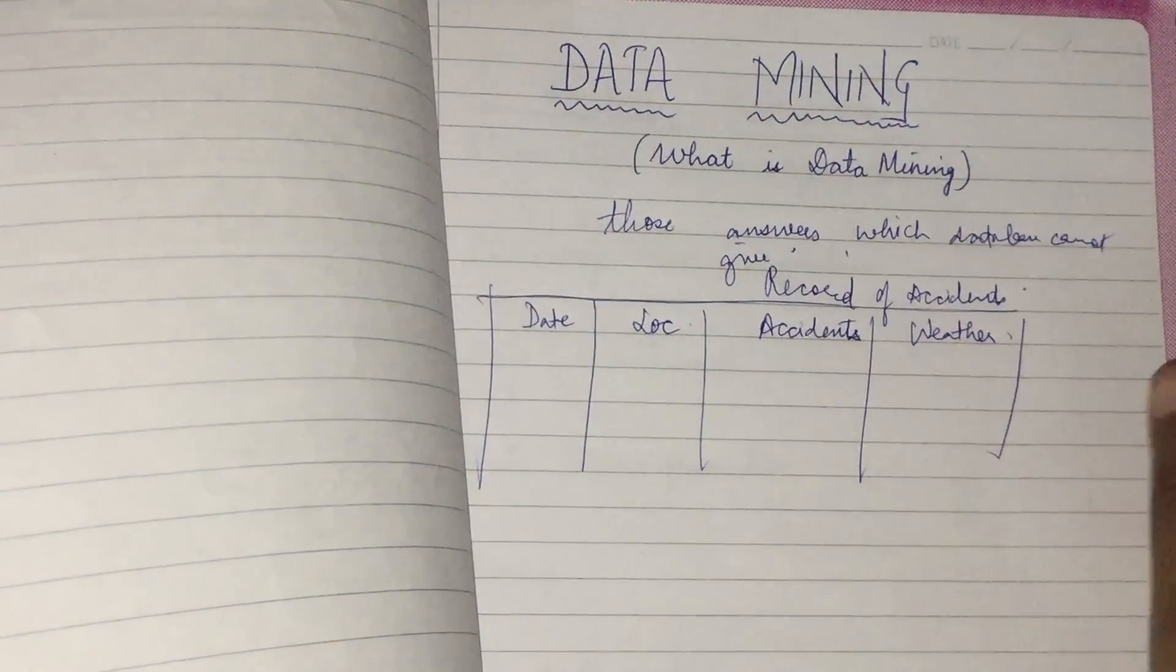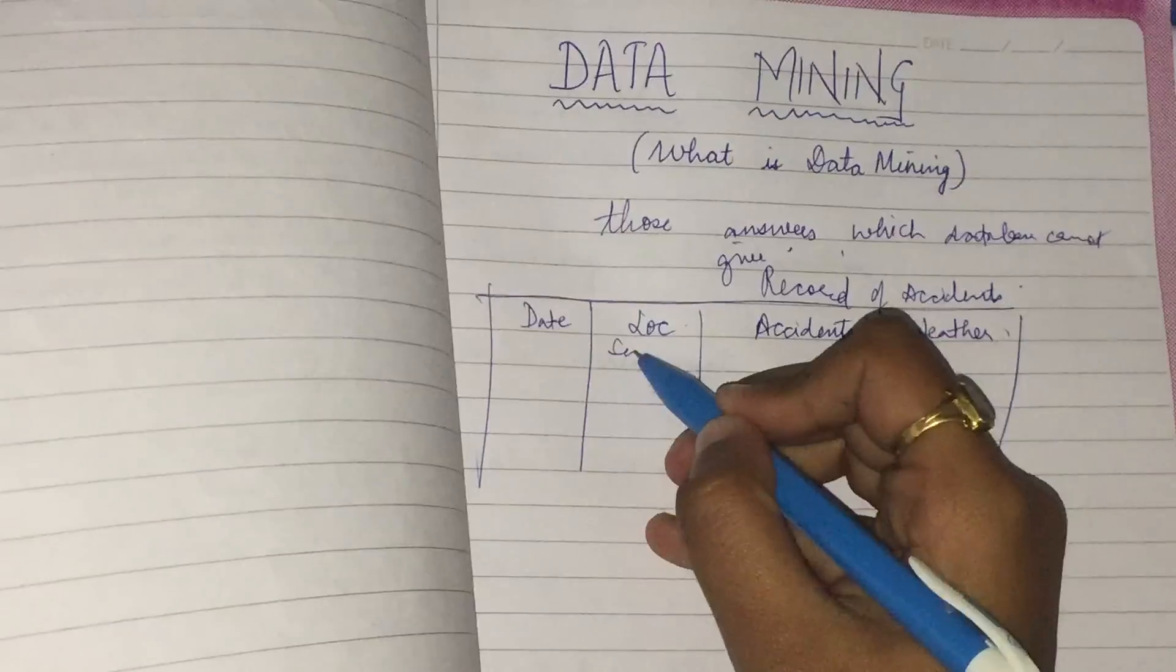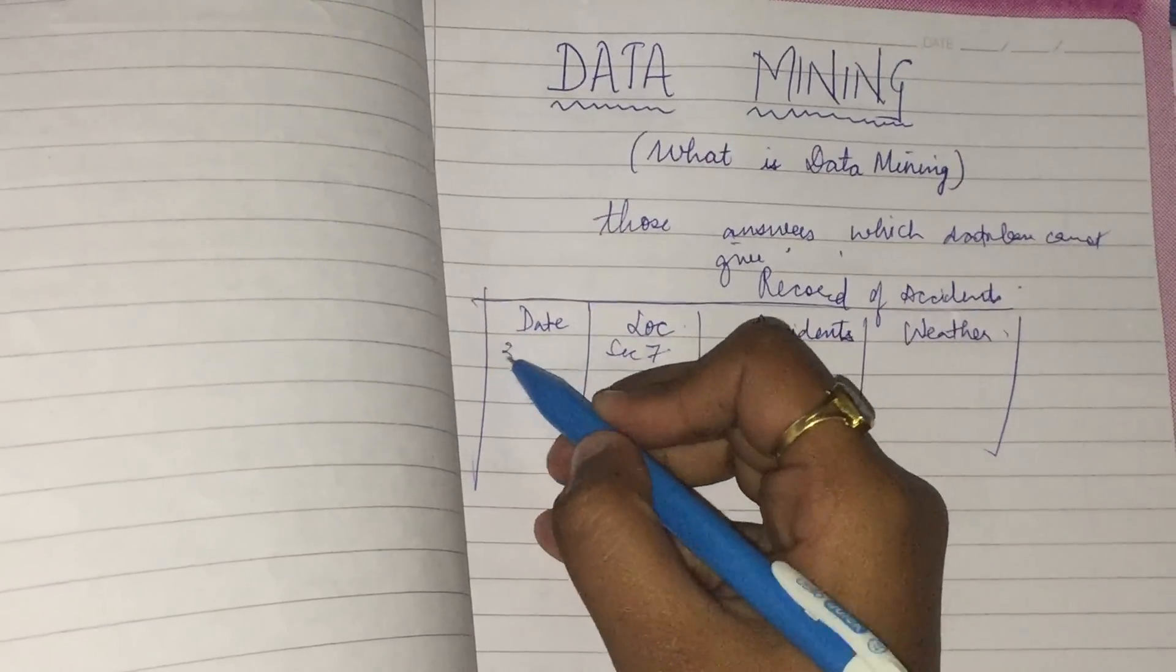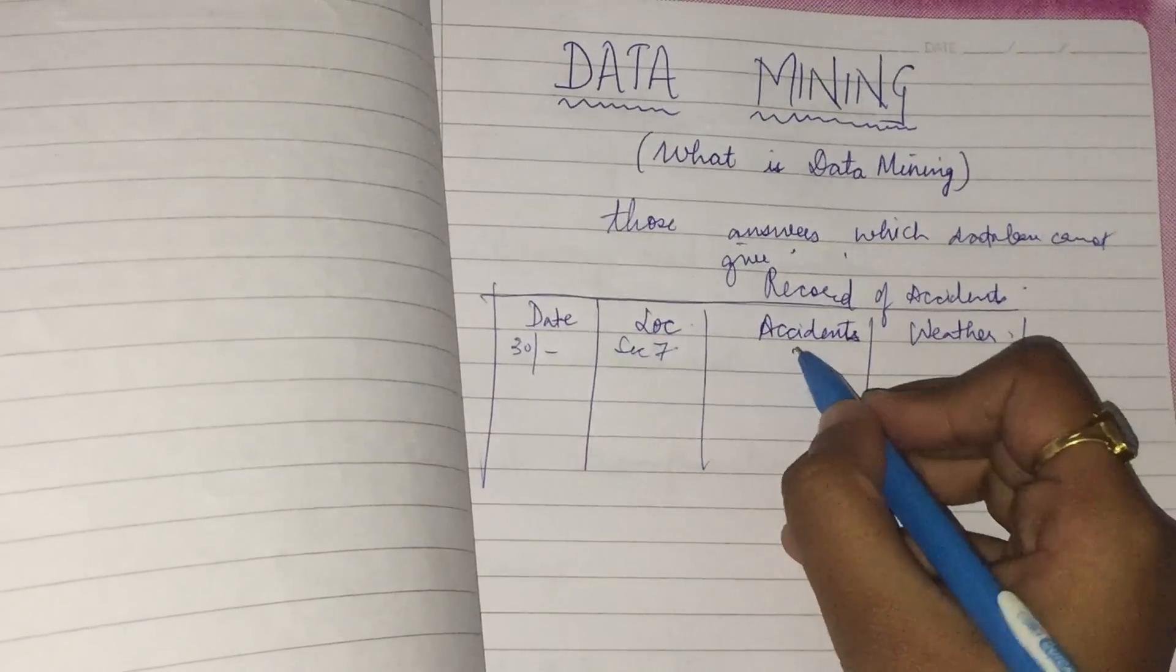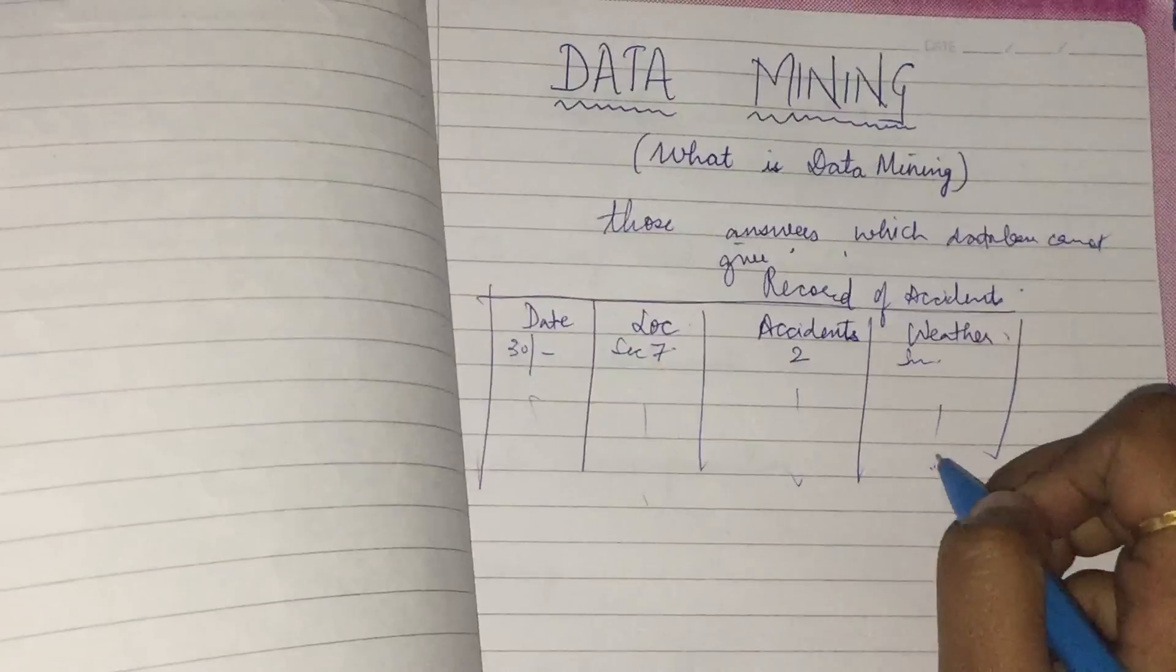On sector 7, on date 30th, the number of accidents was 2, and the weather was sunny. With the help of database I can get records.